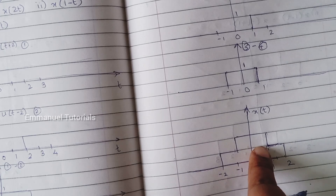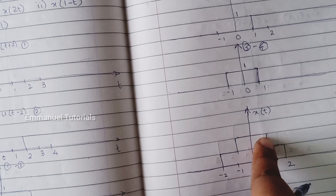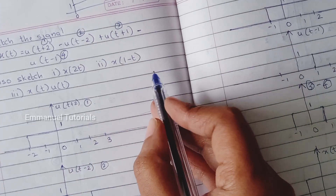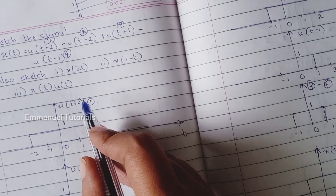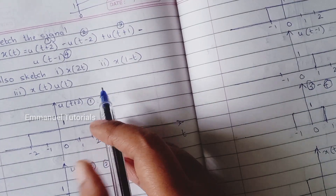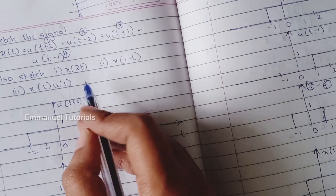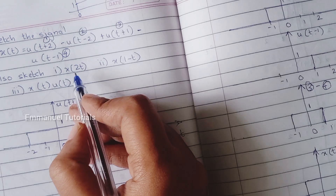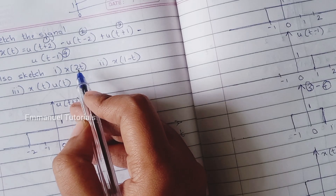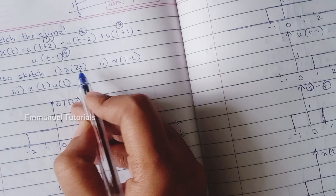This is our resultant x(t), which is u(t+2) - u(t-2) + u(t+1) - u(t-1). But the question doesn't end here — we also have to draw x(2t), x(1-t), and x(t)·u(t). So that is what we are going to draw next. First one is x(2t), which is time scaling.